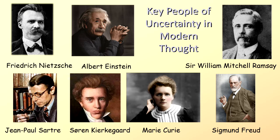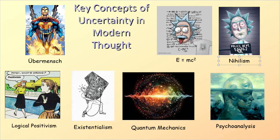Key people in uncertainty in modern thought: Friedrich Nietzsche, Albert Einstein, Jean-Paul Sartre, Soren Kierkegaard, Marie Curie, Sigmund Freud, and Sir William Mitchell Ramsey. Key concepts of uncertainty in modern thought: the Übermensch, Logical Positivism, Existentialism, Quantum Mechanics, Psychoanalysis, Nihilism, and E equals MC squared.